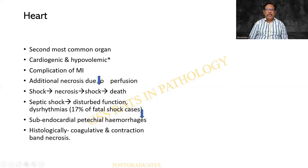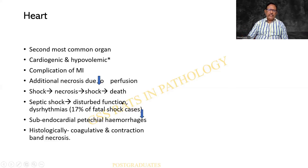The heart is the second most common organ affected; the lung is first. There can be cardiogenic shock or hypovolemic shock. It can occur as a complication of myocardial infarction, or sometimes it can lead to an infarction. Additional necrosis can be because of diminished perfusion — so shock leads to necrosis, leads to shock, and ultimately there can be death. In septic shock, there is a disturbed function; dysrhythmia can be there in about 17% of fatal cases. Another feature is sub-endocardial petechial hemorrhages. Histologically at autopsy, there can be coagulative necrosis and contraction band necrosis.